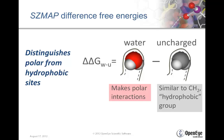Typically, we focus not on free energy itself, but a relative free energy, which is the difference between the free energy of our water probe — which is a proxy for any polar group — and another water, which is uncharged. The uncharged water is a proxy for a hydrophobic group, like a methylene group. The difference between our charged water and our uncharged water allows us to distinguish polar from hydrophobic sites.